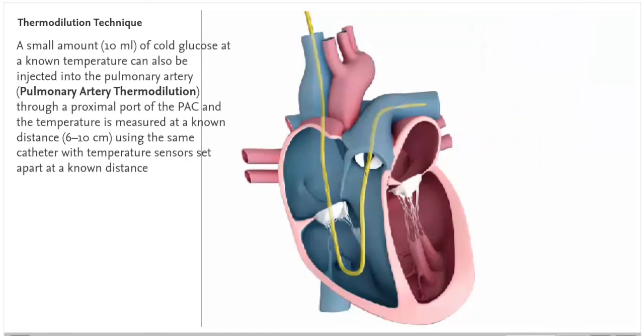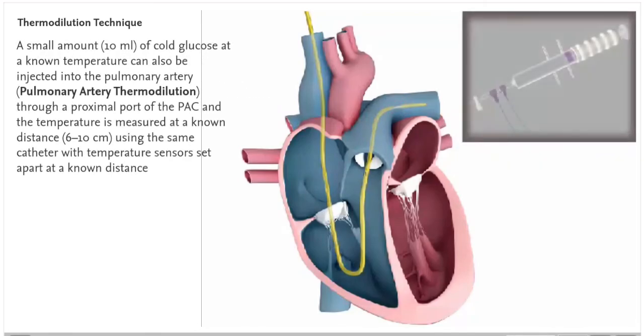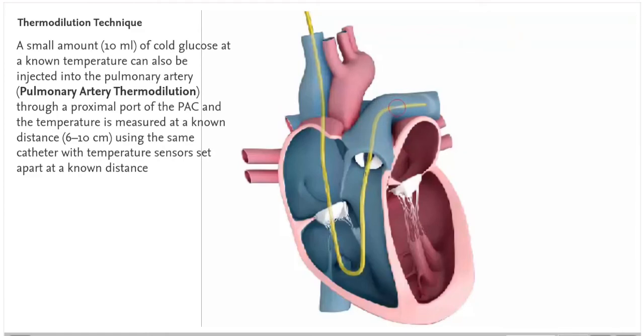A small amount, 10 milliliters of cold glucose at a known temperature, can also be injected into the pulmonary artery through a proximal port of the PAC. This is pulmonary artery thermodilution, and the temperature is measured at a known distance, 6 to 10 centimeters, using the same catheter with temperature sensors set apart at a known distance.